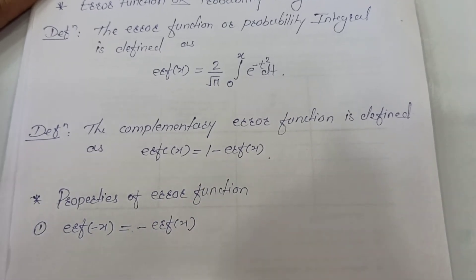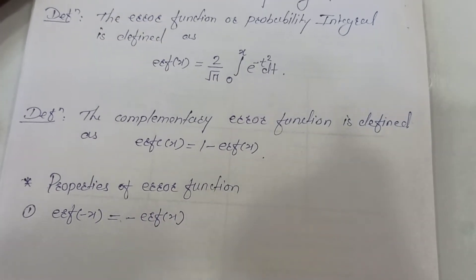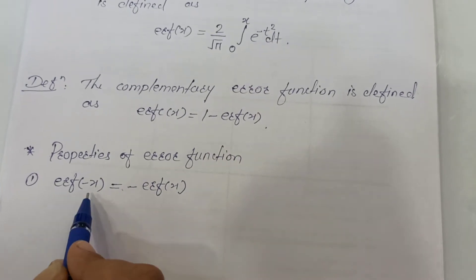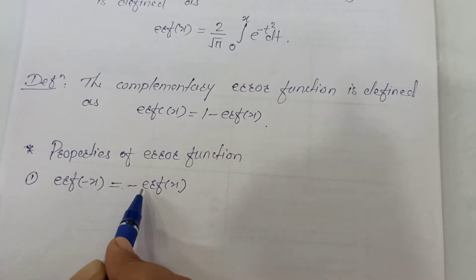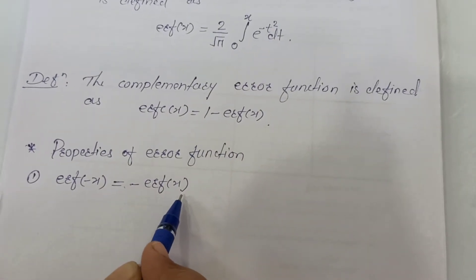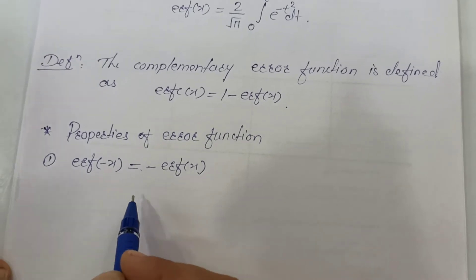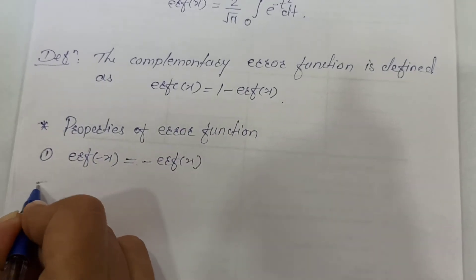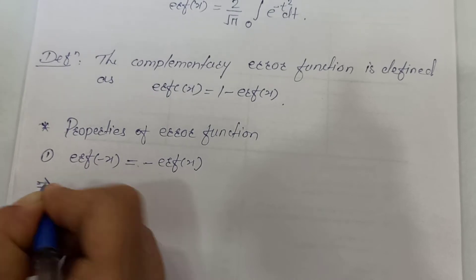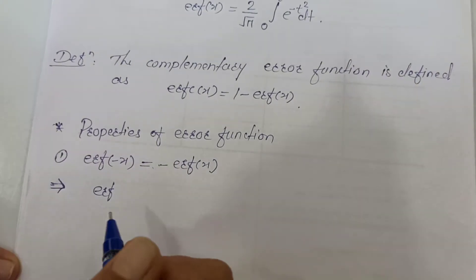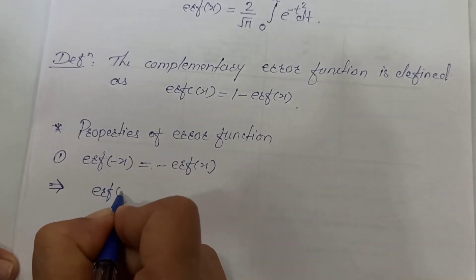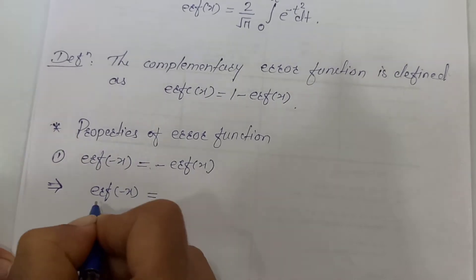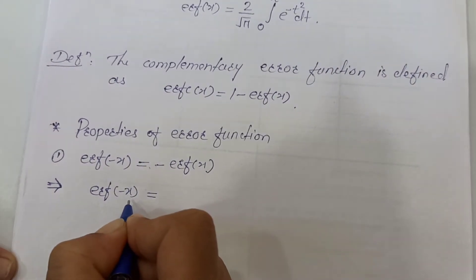So let's study the properties of this error function. The first property is Erf of minus x equals minus Erf of x. We can prove this using the definition of Erf of x. Let's start with the left hand side and consider Erf of minus x.